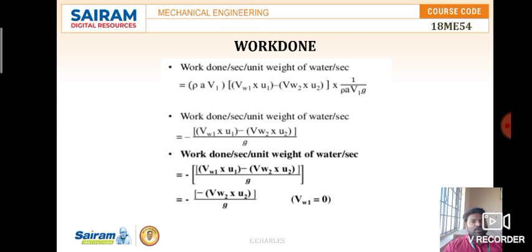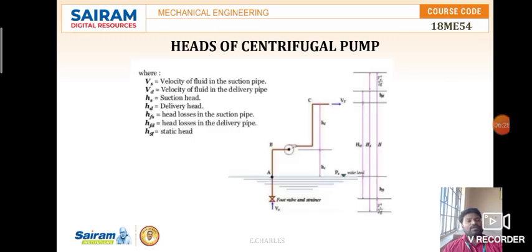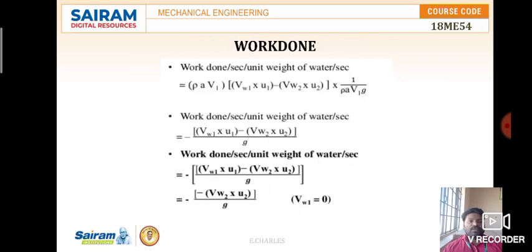Since water enters in the radial direction — as per our assumption — vw1 equals zero. Therefore the work done simplifies to −vw2·u2 / g.